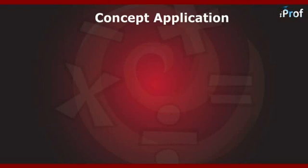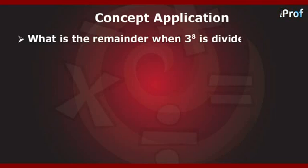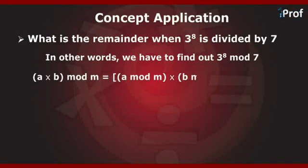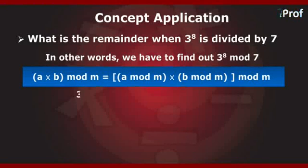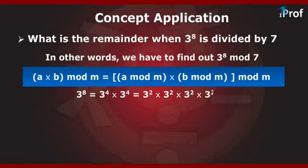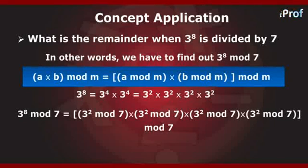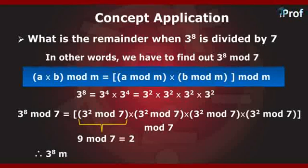Let us now apply the modulo operation. What is the remainder when 3 raised to 8 is divided by 7? In other words, we have to find 3⁸ mod 7. We know that (a × b) mod m = (a mod m) × (b mod m) × mod m. Therefore, 3⁸ = 3⁴ × 3⁴ = 3² × 3² × 3² × 3². Thus, 3⁸ mod 7 = (3² mod 7) × (3² mod 7) × (3² mod 7) × (3² mod 7). Since 9 mod 7 = 2, we get 3⁸ mod 7 = 2 × 2 × 2 × 2 mod 7 = 16 mod 7 = 2.